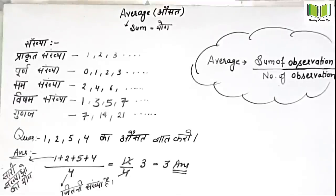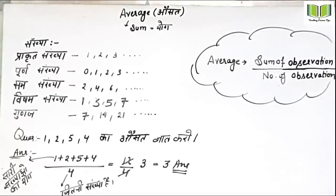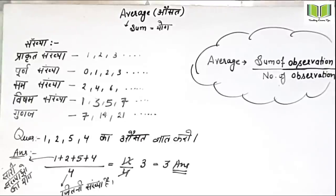I have taken an example of 1, 2, 5, 4. You have to sum all the Sankhya, then divide by the count. If you have 4 numbers, divide the sum. We solved 12 divided by 4. So: sum of all observations upon number of observations — that is the average definition.